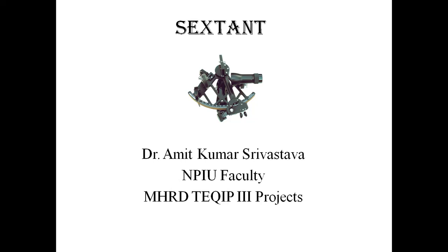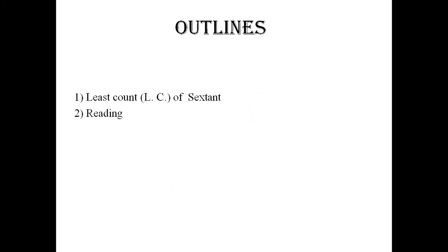Hello, today we will discuss the sextant. A sextant is an instrument used for measuring the angle between two visible objects. First, we will discuss the least count of a sextant. The least count of an instrument is the smallest measurement that can be taken accurately with it. Second, we will discuss how to read the sextant.